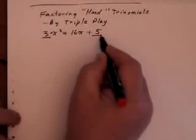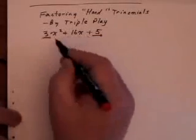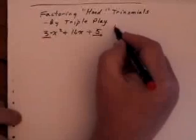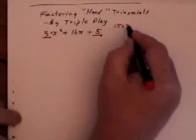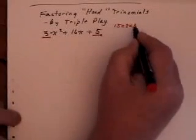So, just like decomposition, I start my question off by doing 3 times 5. That gives me 15. My first term, 3, times my second term.